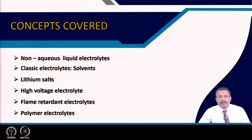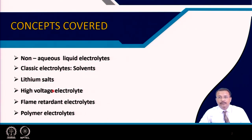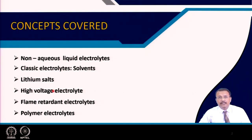To increase the energy density of the battery, you need to use high voltage cathode material, and the existing classical electrolytes may not be sufficient. So high voltage electrolytes are being developed. The flammability of this kind of electrolyte is a concern — it catches fire if the battery malfunctions, particularly if dendrites form or if there is an internal short circuit generating a lot of heat, causing the electrolyte to catch fire. Flame retardant electrolytes and polymer-based electrolytes will also be discussed.